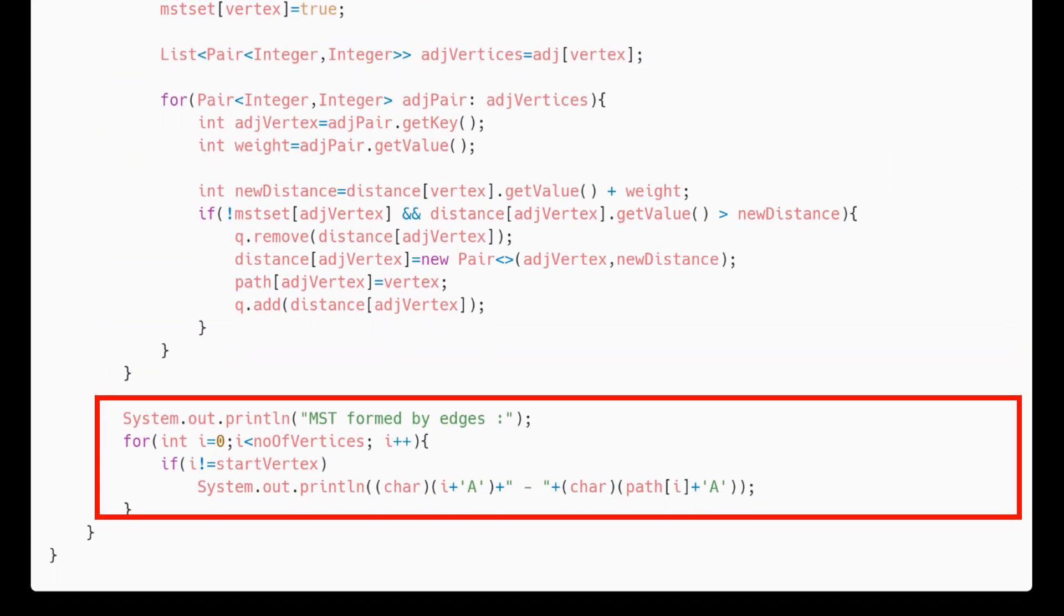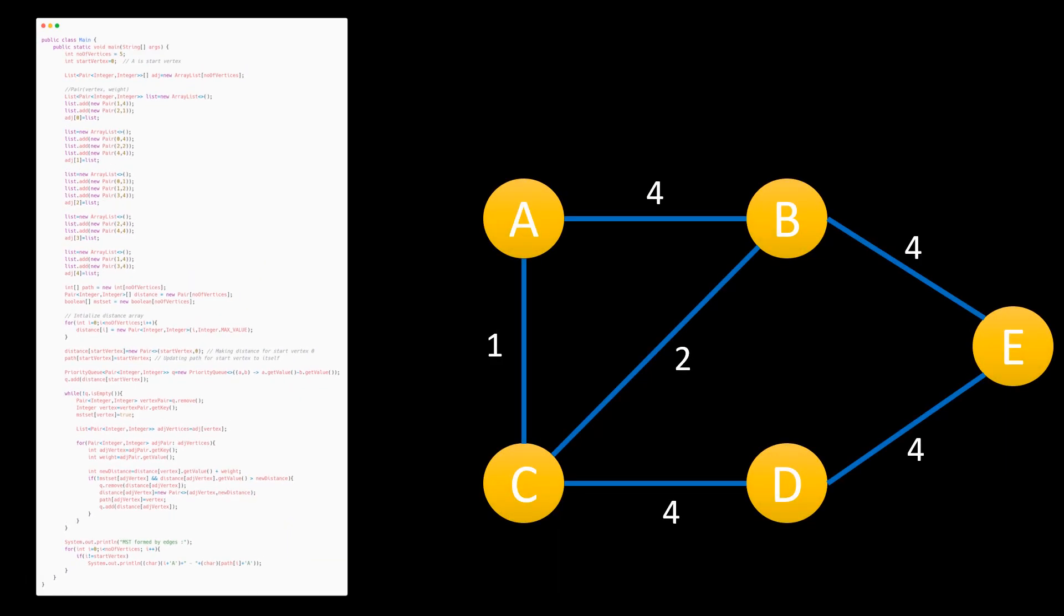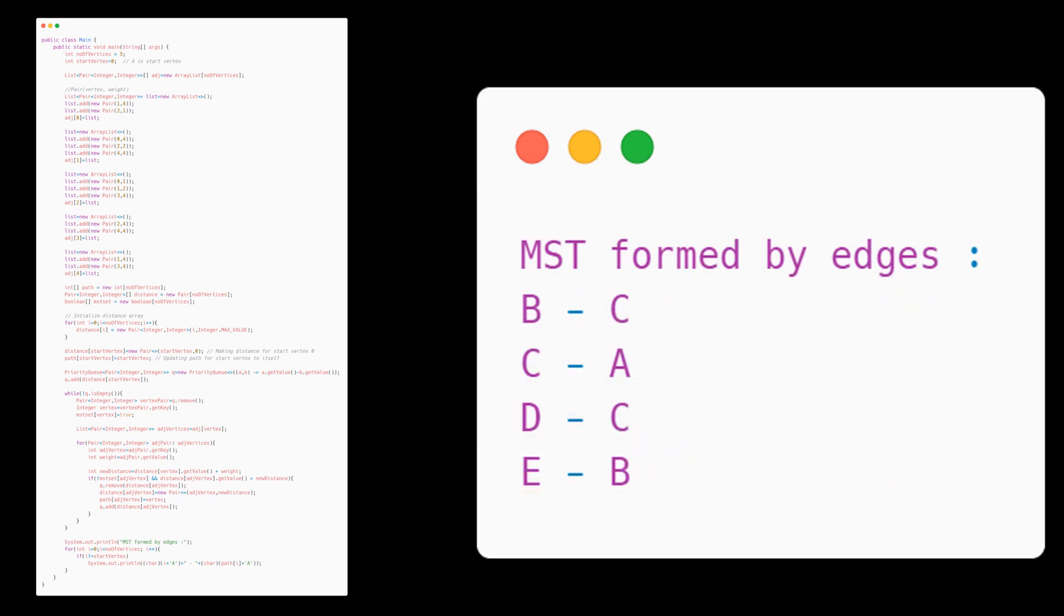At the end we print the result of edges which are needed in order to create the minimum spanning tree. When we run the code, we get this as output which are the edges included in the minimum spanning tree. Try the code and optimize it further.